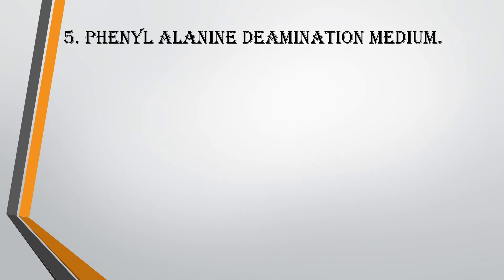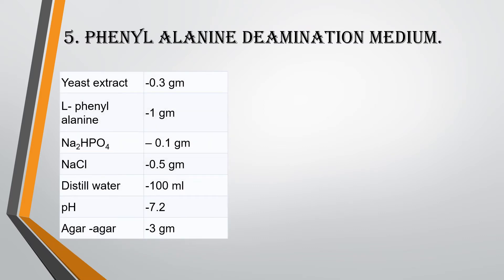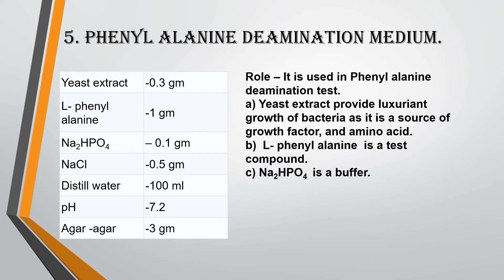The fifth medium is Phenylalanine Deamination Medium. Components are: Yeast Extract 0.3 g, L-Phenylalanine 1 g, Na2HPO4 0.1 g, NaCl 0.5 g, Distilled Water 100 ml, pH 7.2, and Agar Agar 3 g. This medium is used for the Phenylalanine Deamination Test. Yeast Extract provides luxuriant growth of bacteria as it is a source of growth factors and amino acids. L-Phenylalanine is the test component and Na2HPO4 is a buffer.